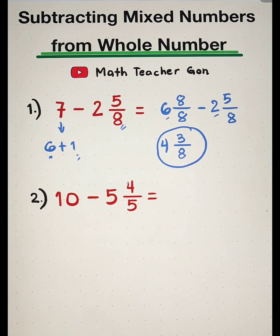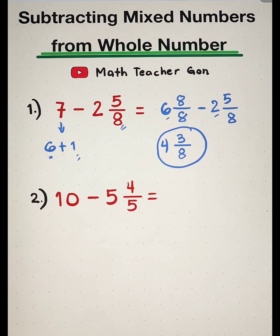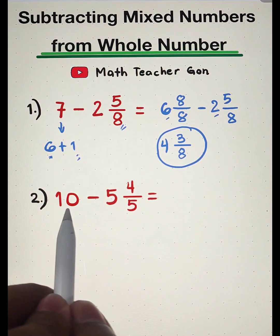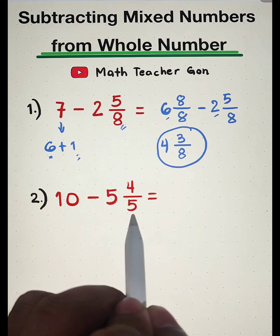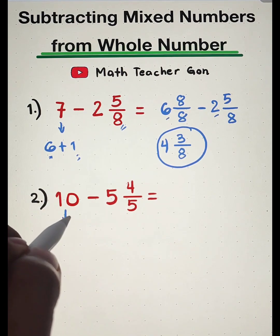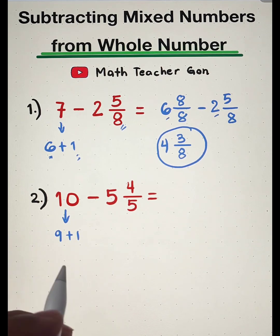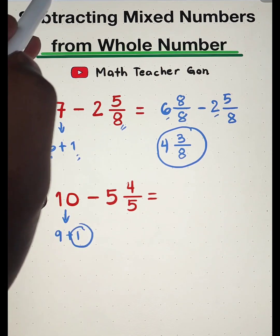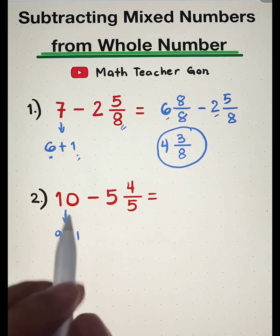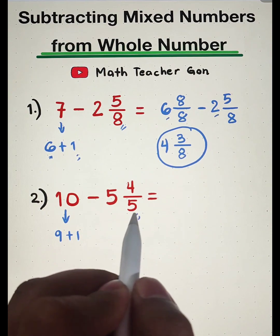Now let's move on with item number 2 for you to realize more about this topic. We have 10 minus 5 and 4 over 5. We will convert this into 9 plus 1.